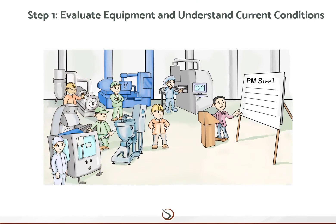The first step of Planned Maintenance is about evaluating equipment and understanding current conditions. Knowledge of equipment ranks and current conditions will help us in developing a strategy to achieve the Planned Maintenance goals.